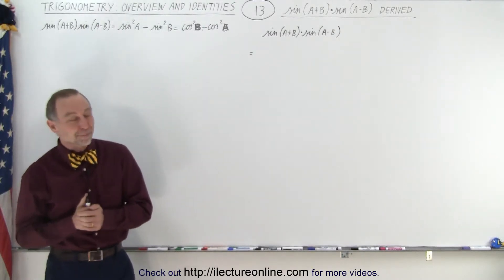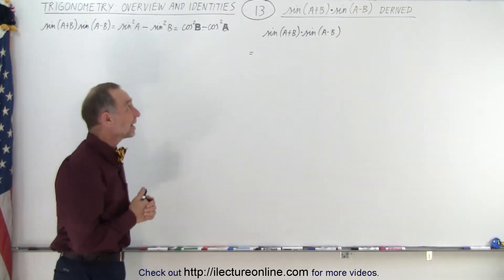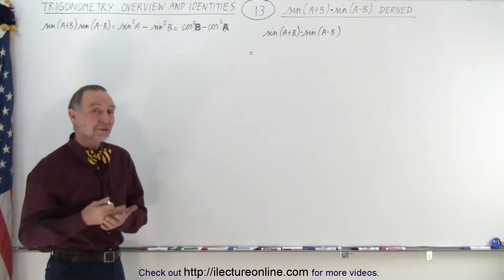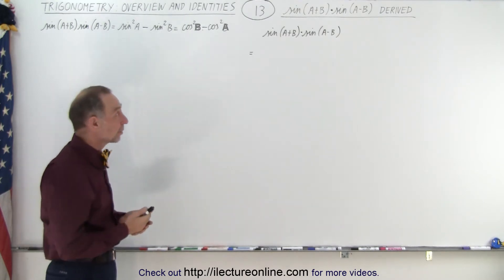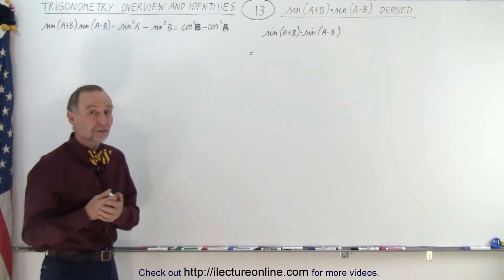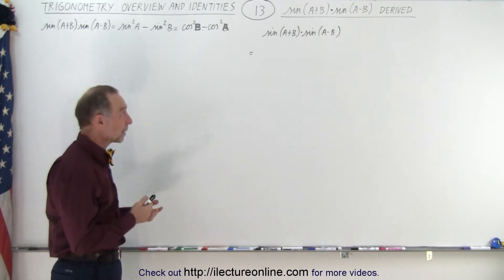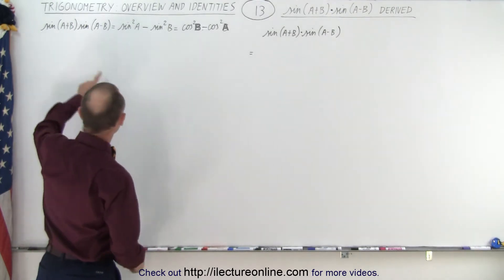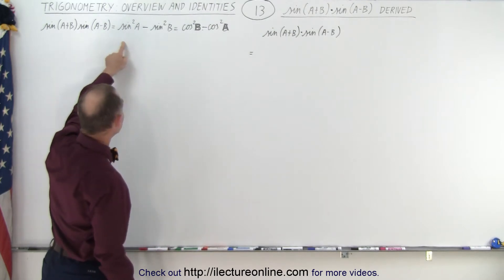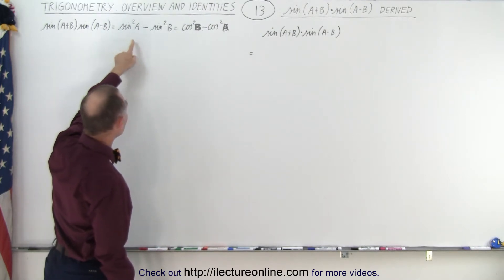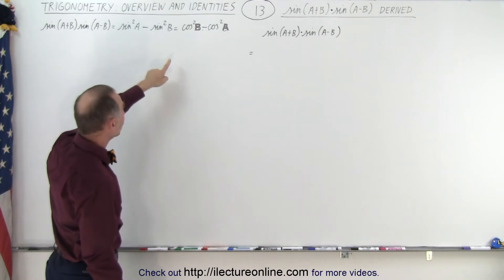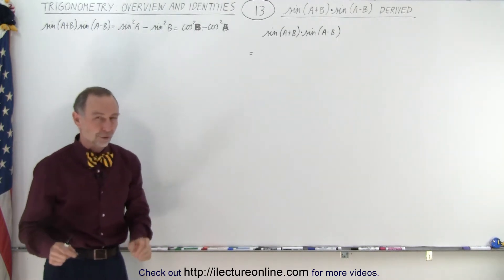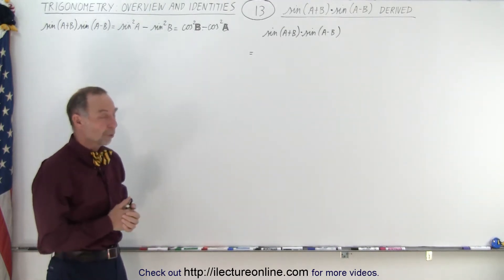Welcome to iLectroOnline. The next identity we're going to derive is the product of the sine of the sum of two angles and the sine of the difference of the same two angles: sine of (a+b) times sine of (a-b). Here are two possible forms of the identity — it's either equal to sine squared of a minus sine squared of b, or cosine squared of b minus cosine squared of a. We're going to derive both forms.